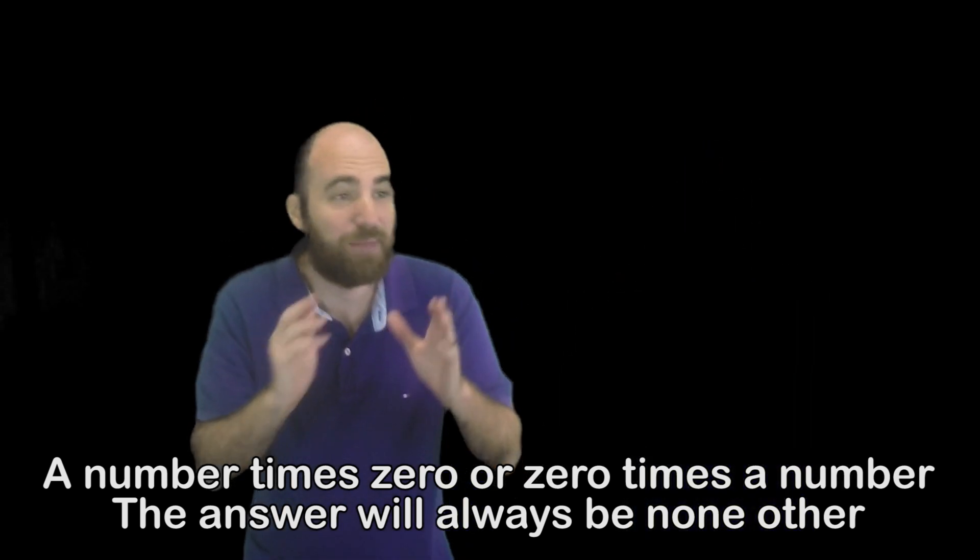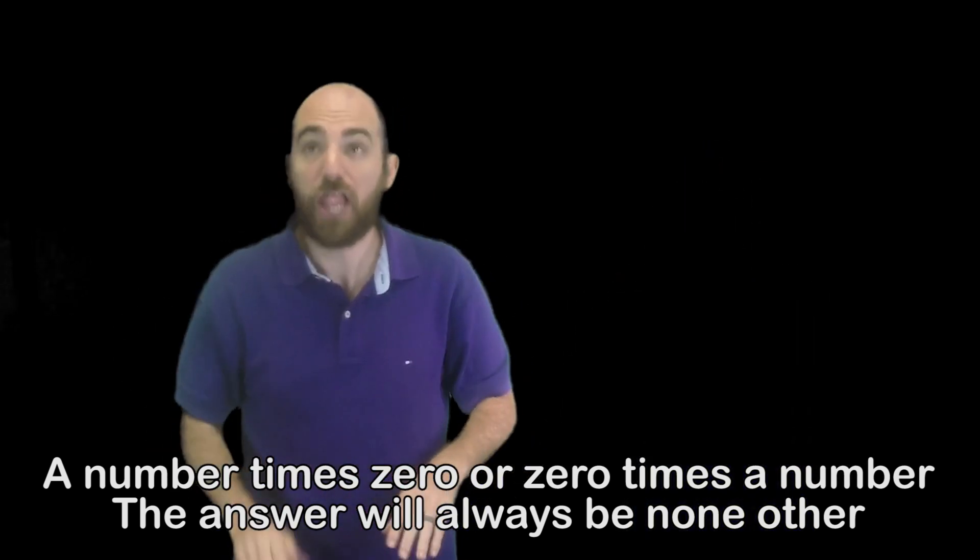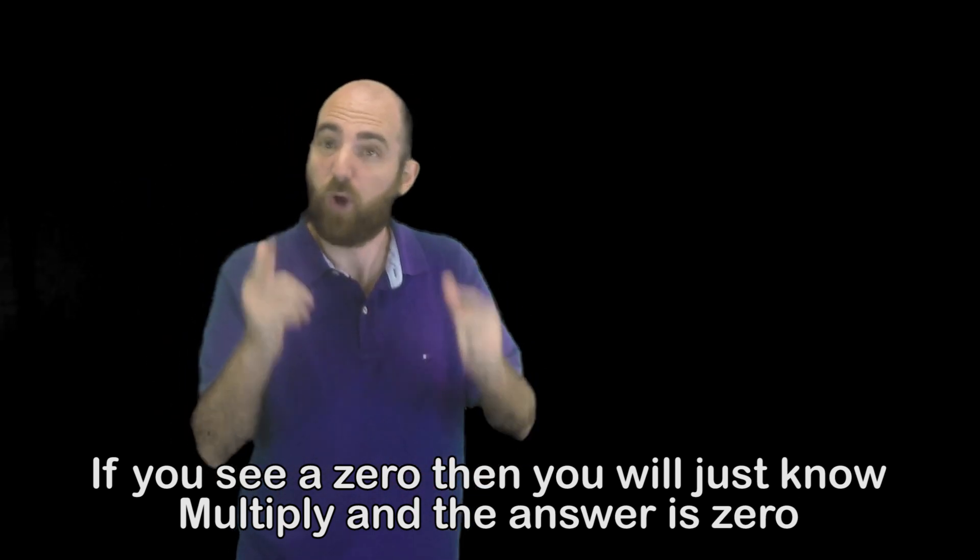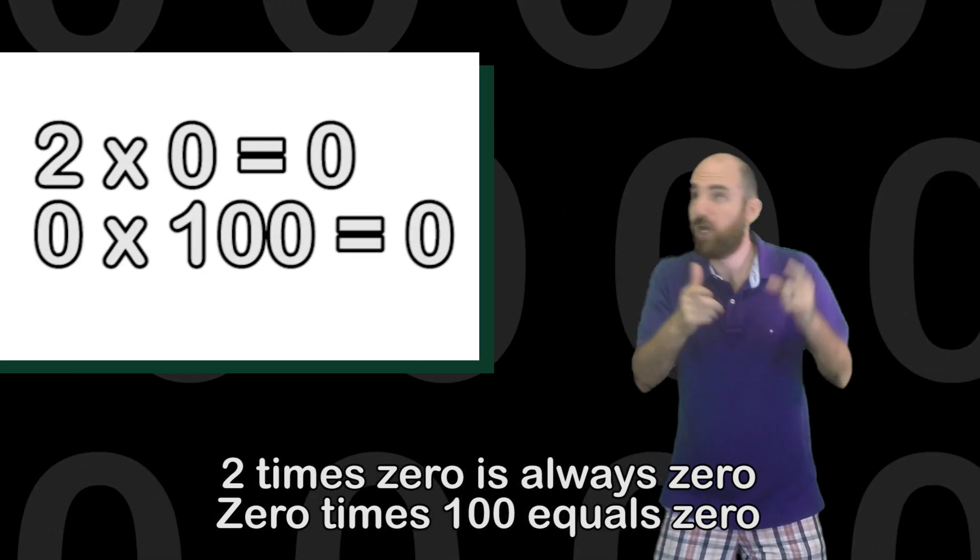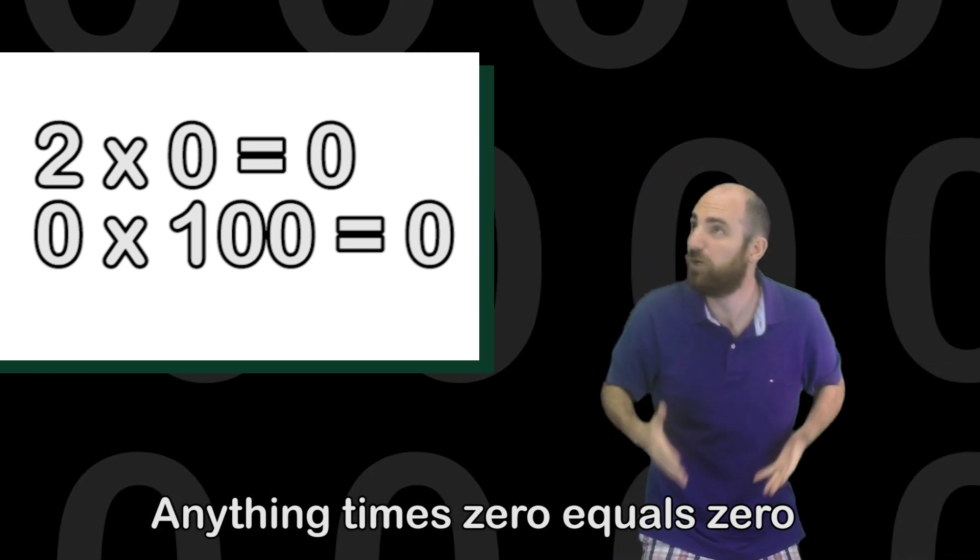A number times zero or zero times a number, the answer will always be none other. If you see a zero, then you will just know. Multiply, and the answer is zero. Two times zero is always zero. Zero times a hundred equals zero. Anything times zero equals zero.